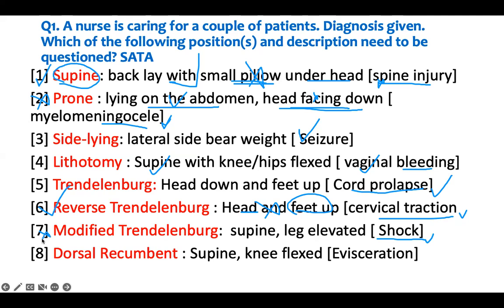Dorsal recumbent - this is used when a patient has evisceration. They lay supine with the knee flexed. It's almost like a modified Trendelenburg, but you don't raise the leg high - you just flex the knee so that it can prevent excessive ongoing evisceration. So this patient doesn't need anything. So the patients that we need to question are one, two, and three.